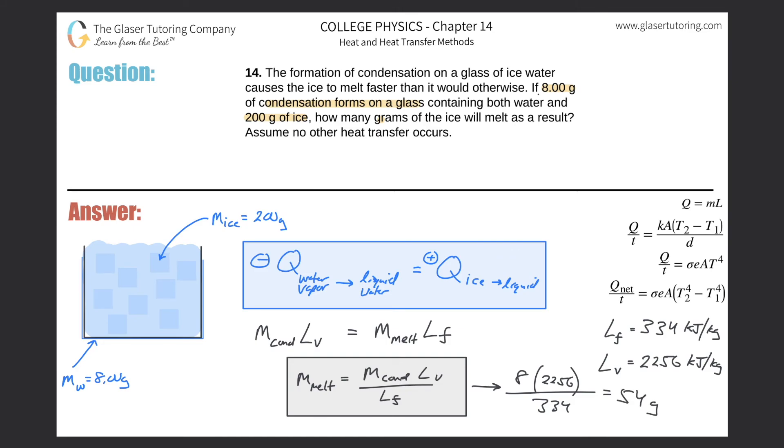54 grams of that ice has now melted. So if only eight grams condenses of water on the outside of the cup, that's equivalent to then 54 grams of ice melting inside the cup. Because remember the heat is being transferred.